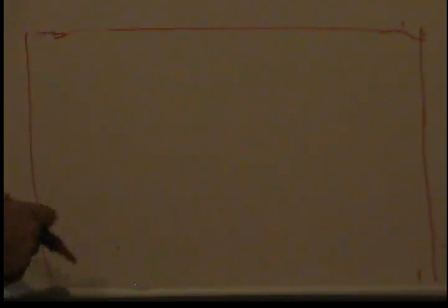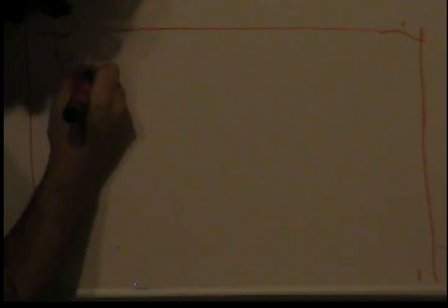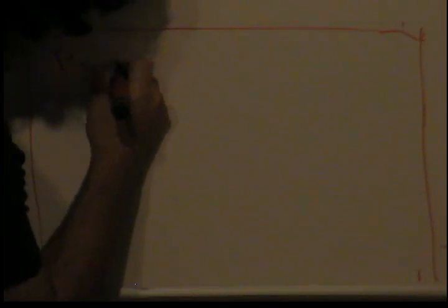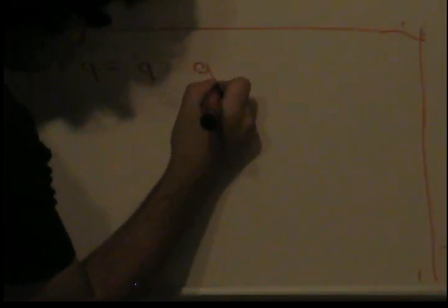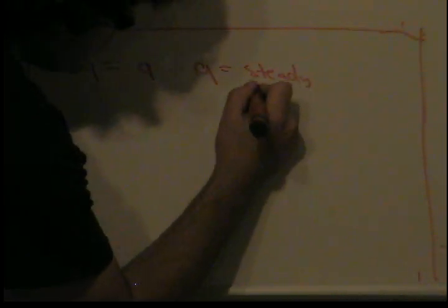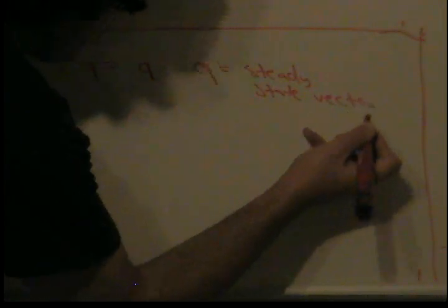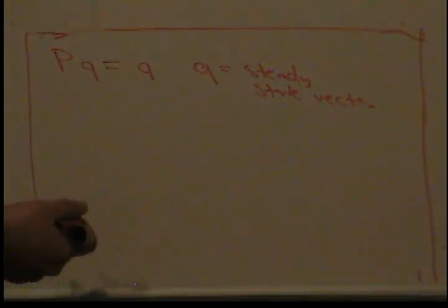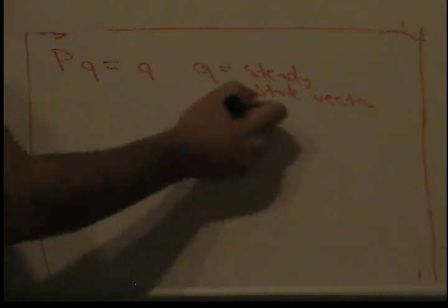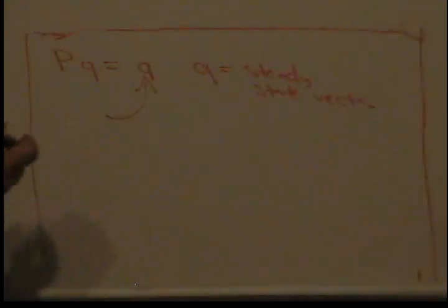Okay, today we're going to talk about steady state vector, which pretty much says that if P times Q equals Q, then Q is the steady state. This means that we have to find a vector Q that if we multiply by P, we're still going to get back Q.